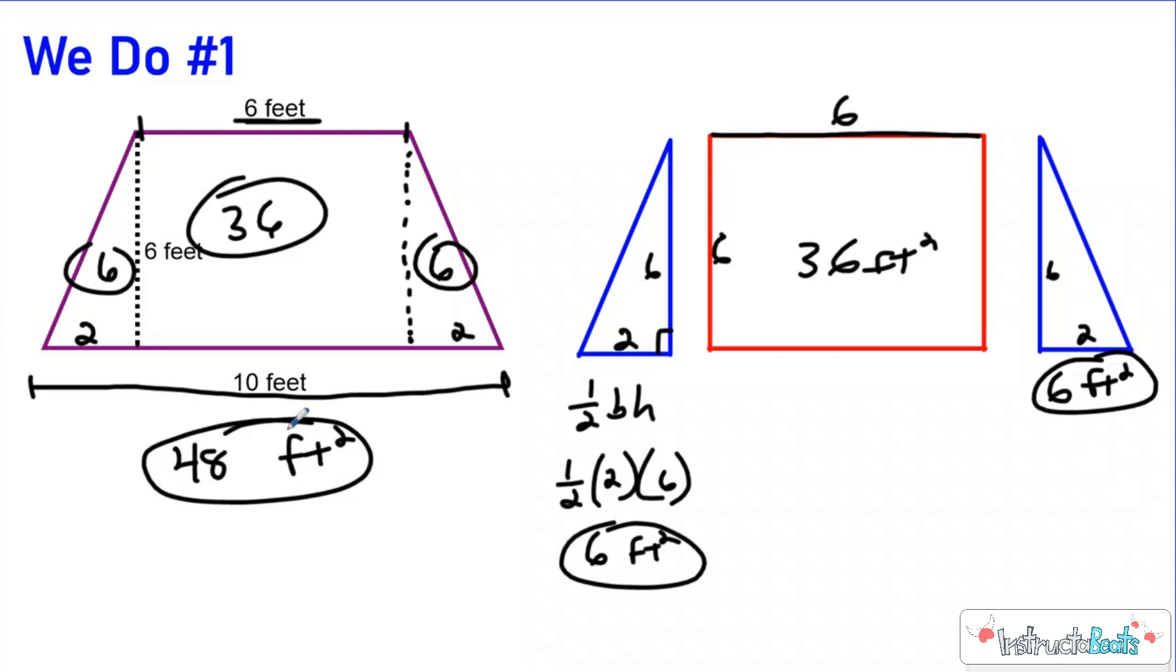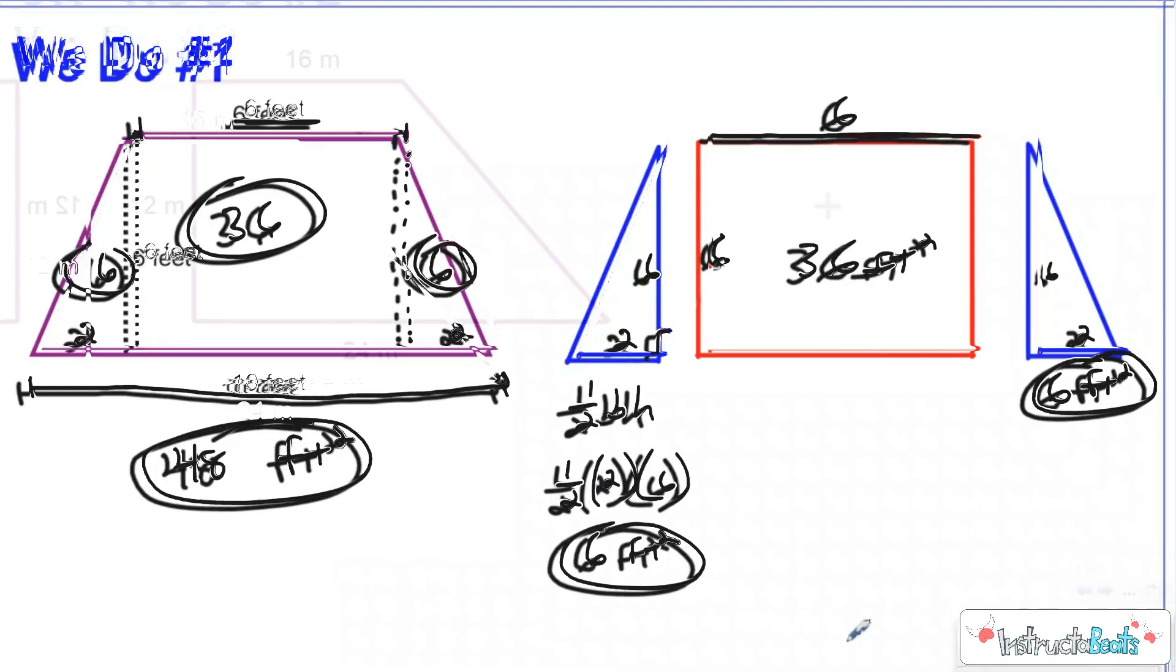So either way you do it, you're going to come up with the same answer. I do think it's a little bit easier to split up diagonally because then you're only doing two triangles instead of three different shapes. But depending on what shape you're doing, you might have to do six triangles. Let's take a look at a second we do problem.